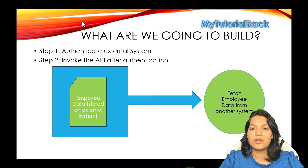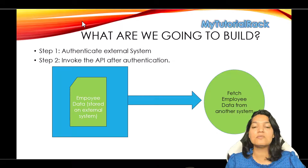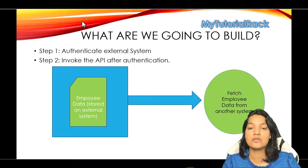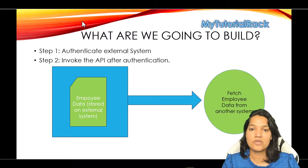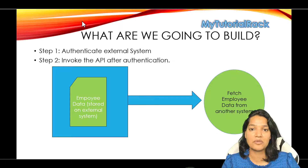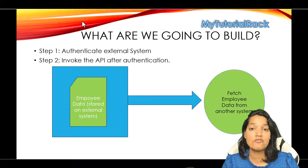Hello guys, welcome back. In this video, we are going to see how to invoke our external system from Postman. It doesn't matter which system you are trying to connect with. The first step is you have to authenticate yourself to make sure you are the right person who can make that call. Once authenticated, you'll be able to make any of those API calls. The first step is authenticating yourself, and then the second step is making your next call using the token from the previous authentication call.